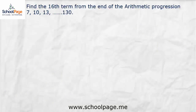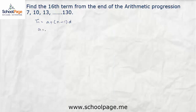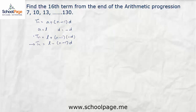Let us find the 16th term from the end of the arithmetic progression 7, 10, 13, ... with last term 113. When finding a term from the end, a is replaced by l (the last term) and d becomes negative. So the formula becomes: tn equals l minus (n minus 1) times d.